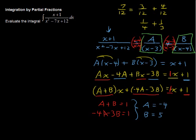So I'll rewrite this as the integral of negative 4 over x minus 3, that's this one, dx, plus the integral of 5 over x minus 4 dx. That's this one.